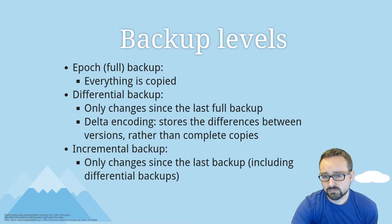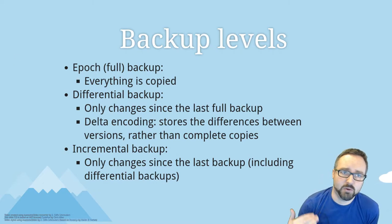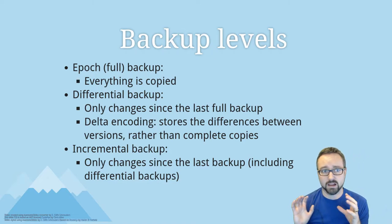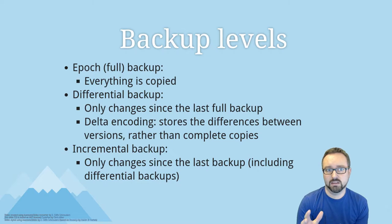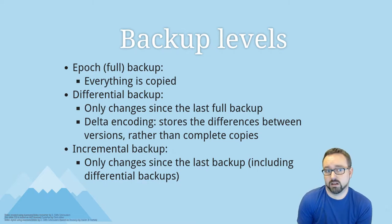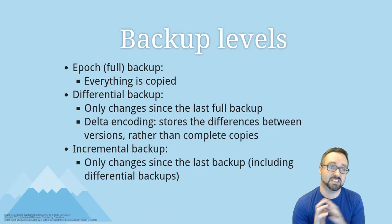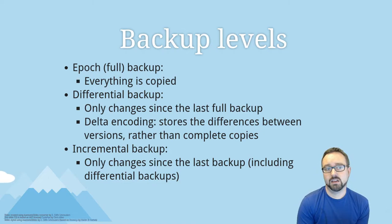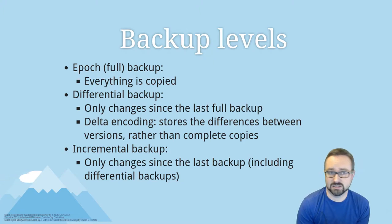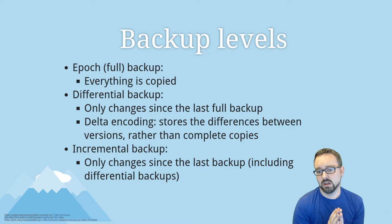With backups there are a number of different kinds or levels of backup. There's a full backup, or epoch backup, where you just copy everything — a complete copy of all the files. You don't want to do that every time, so you might do a differential backup, which is where you just look at what's changed since you did that last full backup. You might use something called delta encoding to save just the differences in files.